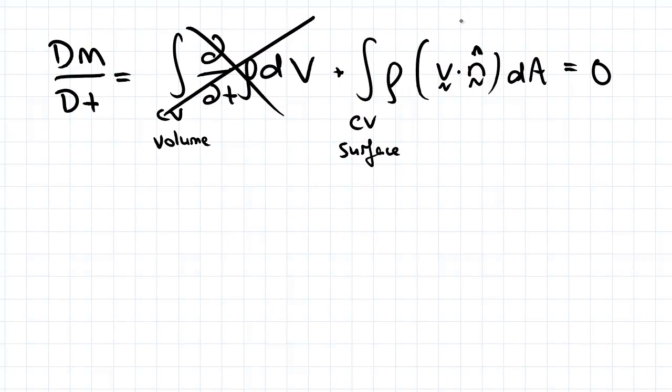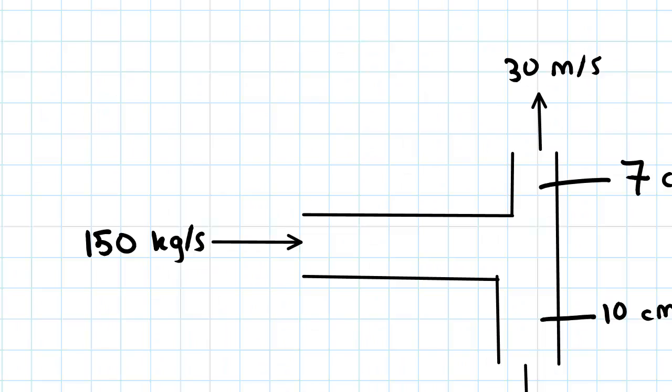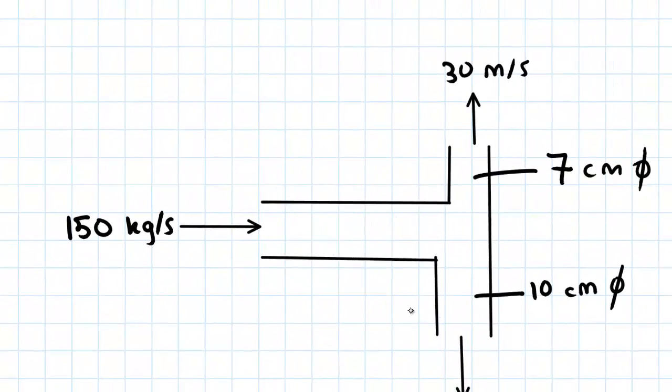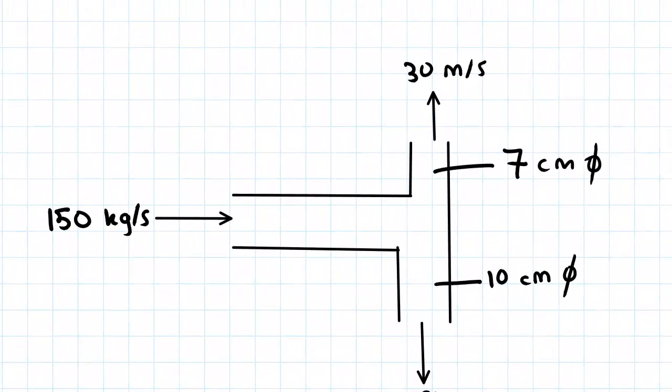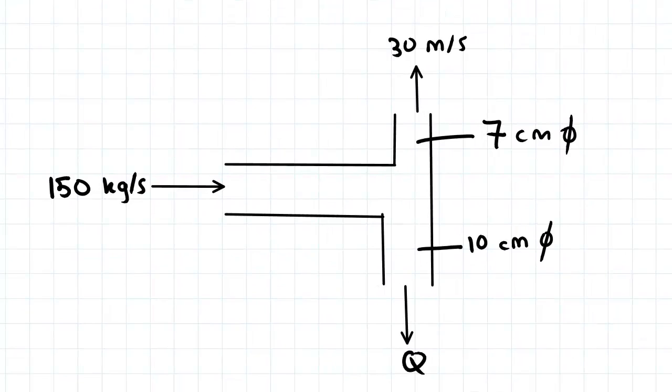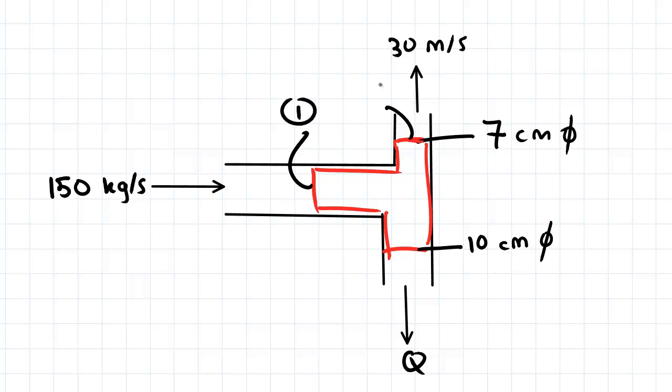We need to define our control volume. So we go back to the diagram and draw in our control volume. You can draw it in if you like, something like that. I'll explain why I've chosen this as my control volume. And I'm going to call this my surface 1, this my surface 2, and this my surface 3.